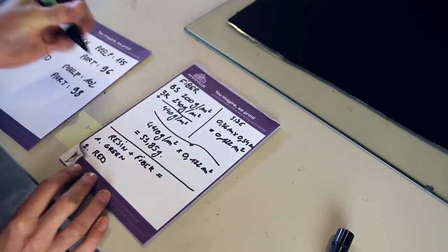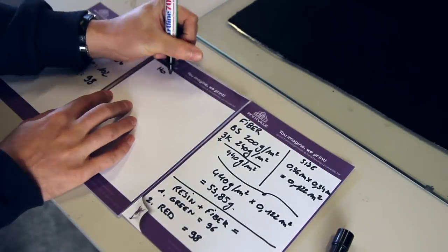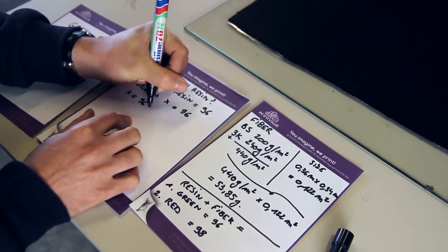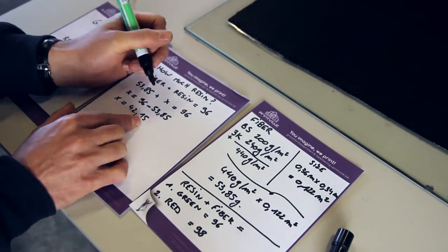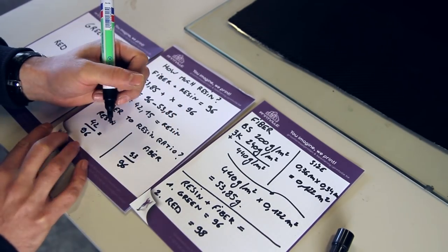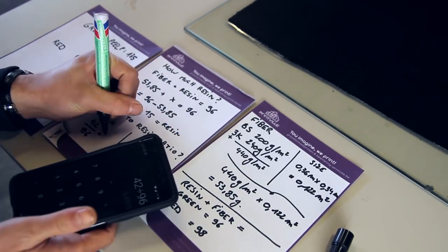It's 440 grams per square meter. We only have 1.12 square meters, so it's 53.85 grams on each plate of fiber. Now we know about the resin and we can calculate the fiber-to-resin ratio.